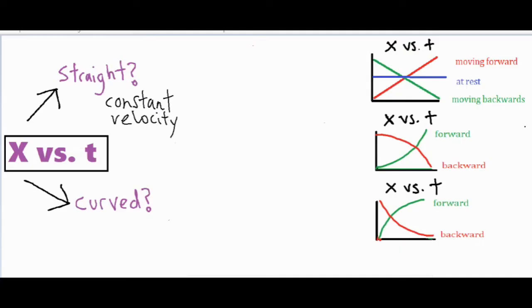On the other hand if something is curved that means the slope is changing as the time is elapsing. If the slope is changing, the rate at which it's moving is also changing which means it's an accelerated motion, which just means that its velocity is changing. It could be speeding up or slowing down depending on the type of curve.